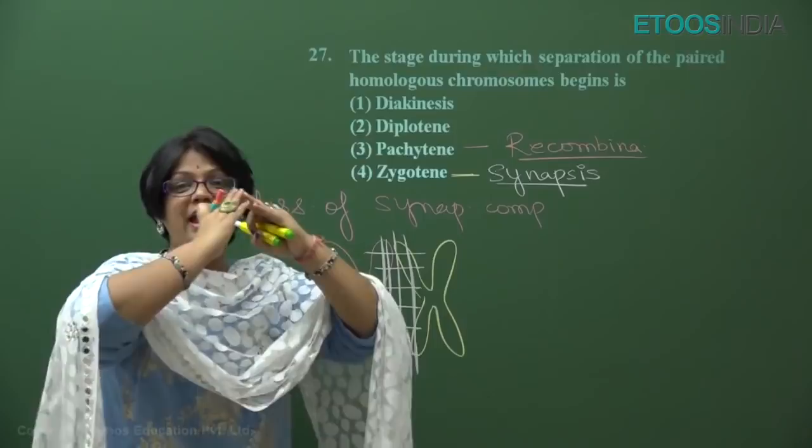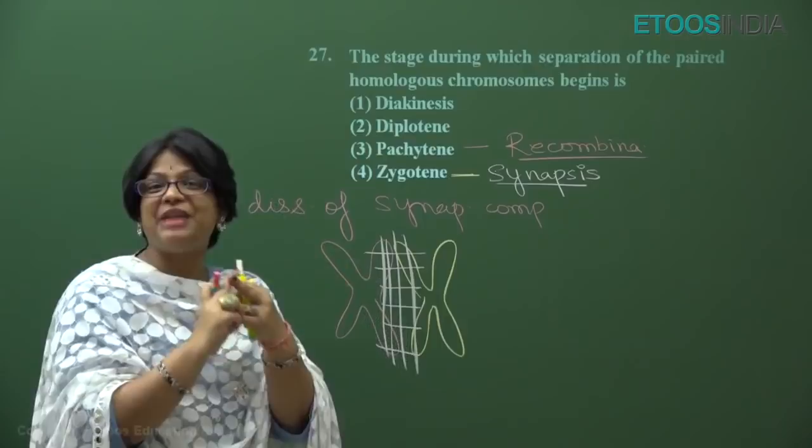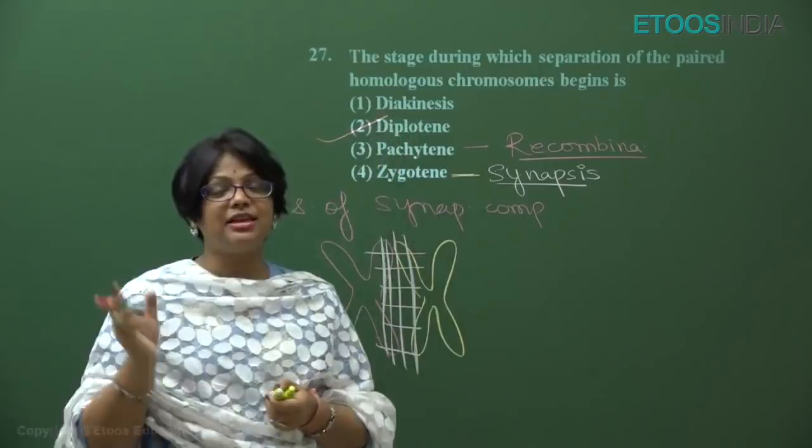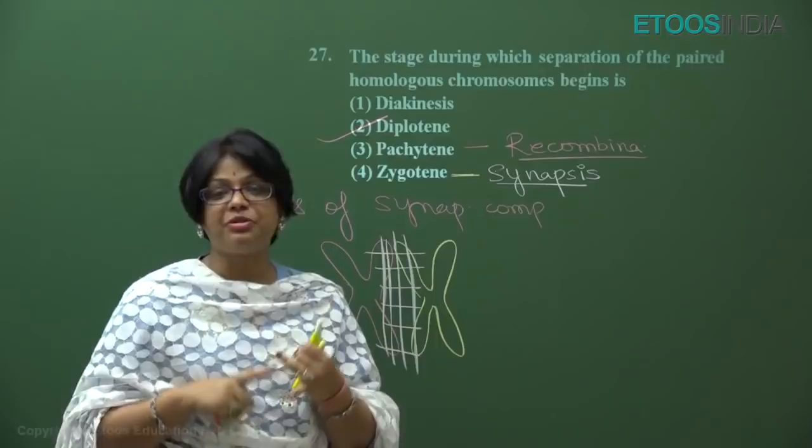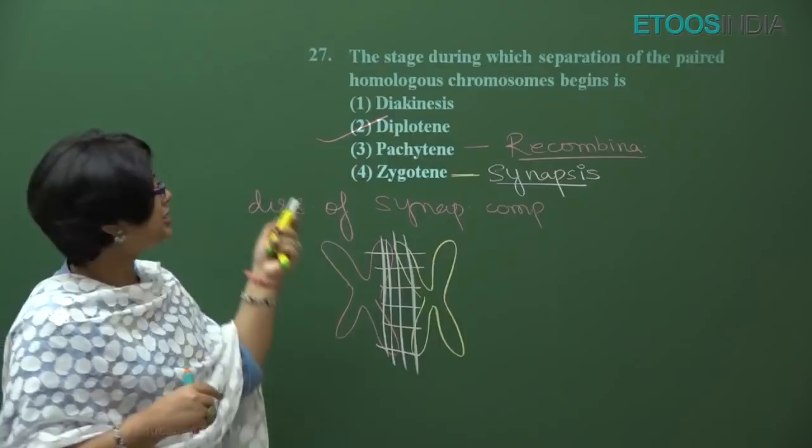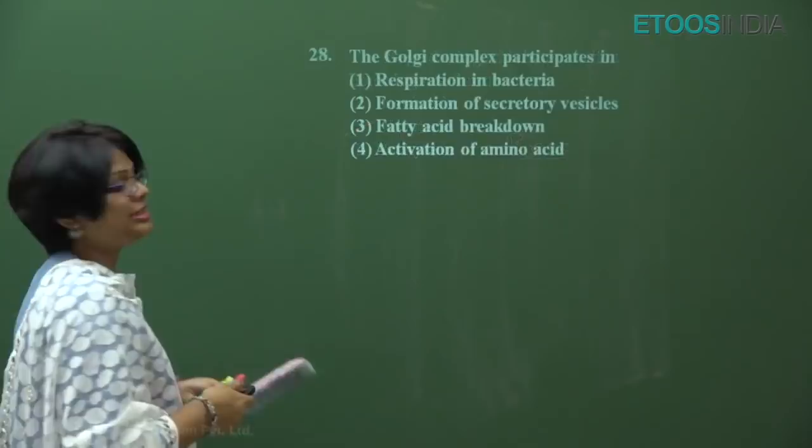Diplotene contains the X-shaped chiasmata. Diakinesis is the last stage of prophase of meiosis I, in which the nuclear membrane and nucleolus disappear and there is terminalization of chiasmata. So it's a direct NCERT question — answer is number two.